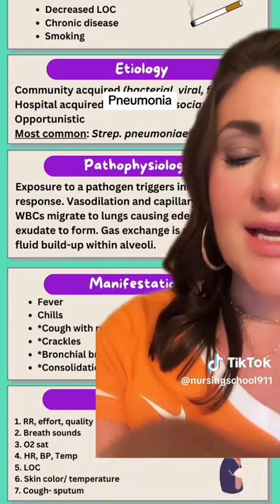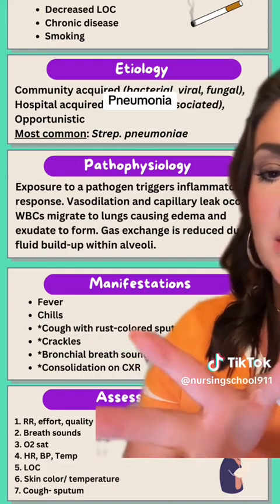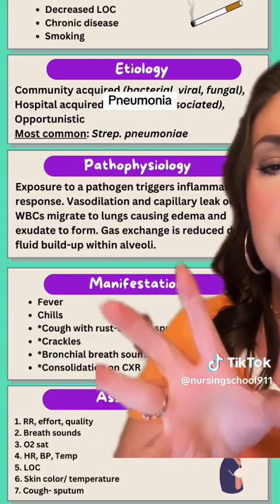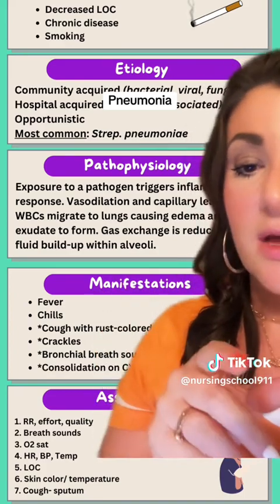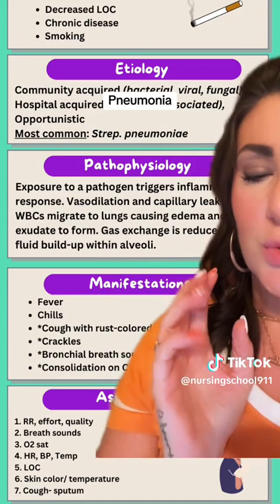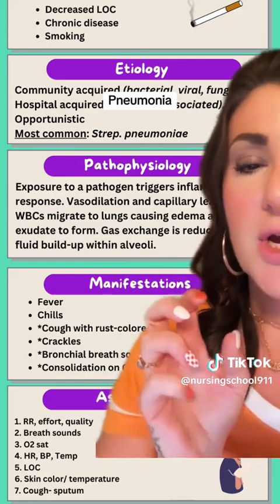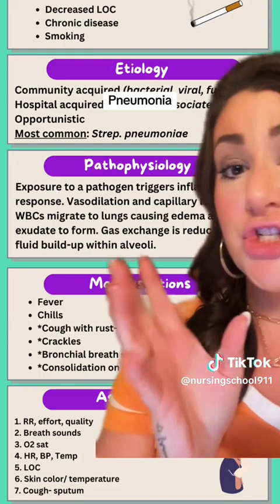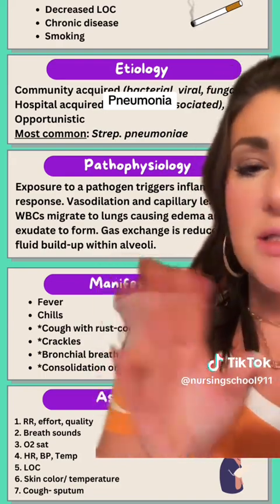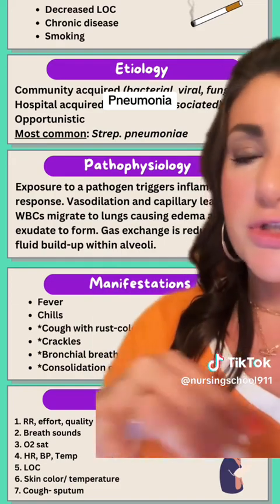So what are we going to assess? A lot of this is going to be going on simultaneously. Obviously respiratory rate and effort — are they using accessory muscles to breathe? The quality of respirations. We're going to listen to those breath sounds, look at O2 saturation, and assess how their gas exchange and oxygenation are doing. Heart rate and blood pressure — always ABC: airway, breathing, circulation.